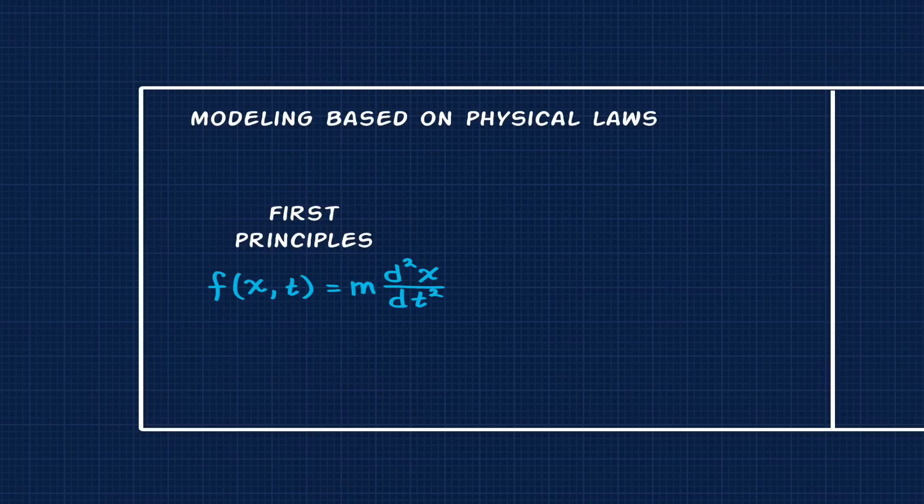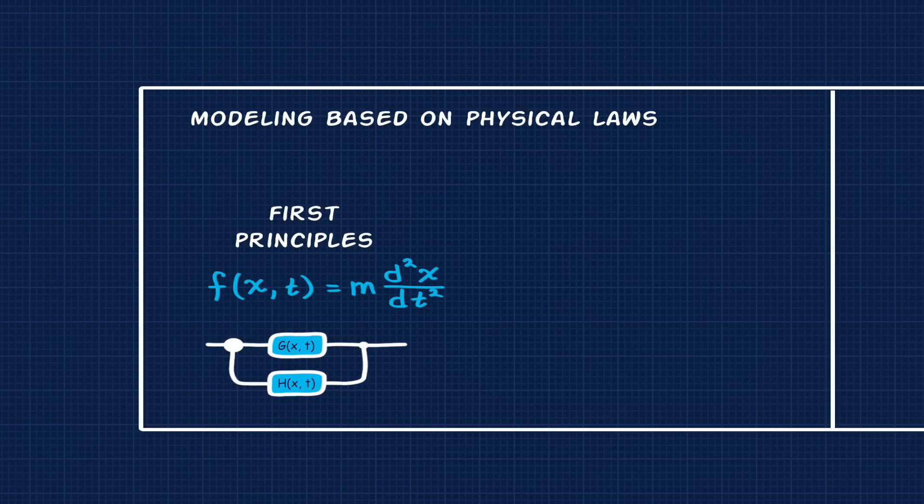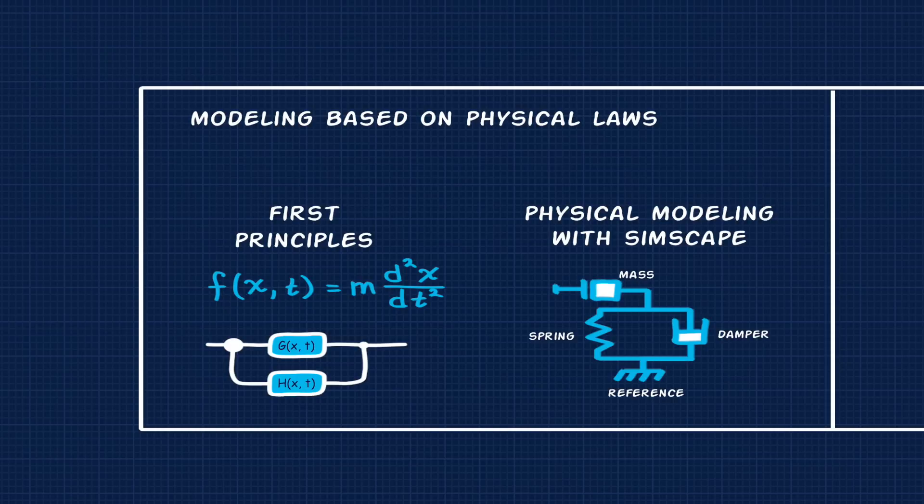Now sometimes your system is too complex to easily write out a single set of equations, or the equations aren't simple enough to be easily interpreted. So in those cases, you can build up a model with smaller mathematical components that are then connected together graphically, like you do in Simulink. And even without knowing how to create and manipulate differential equations, you can create a model with a physical modeling system like Simscape, where you connect physical components together like mechanical, hydraulic, and electrical components, and the software takes care of the differential equations under the hood.